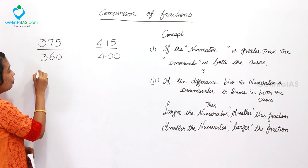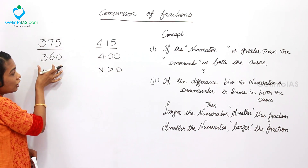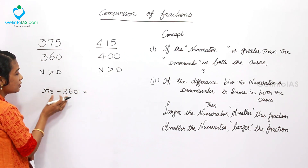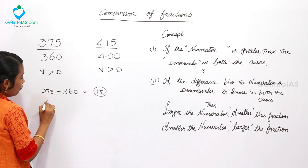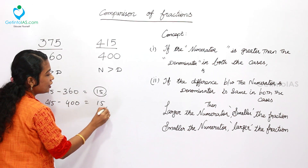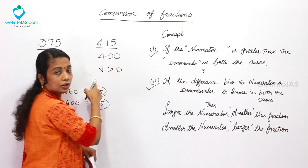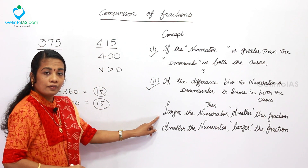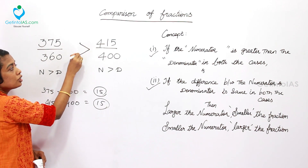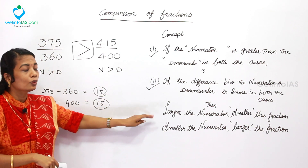Applying Concept 2: checking the first condition — numerator is greater than denominator in both cases, satisfied. Now the differences: 375 minus 316 is 15, and 415 minus 400 is also 15. Both differences are the same — second condition satisfied. Conclusion: larger the numerator, smaller the fraction. So the fraction with the larger numerator is the smallest, and the one with the smaller numerator is the highest fraction.